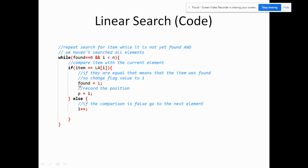Inside this loop, we compare the item with the current element of the array based on the value of i. If they are equal, we set found equal to one and record the position so p equals i. If they are not equal, we proceed to the next element by incrementing i — i plus plus, or i equals i plus one.